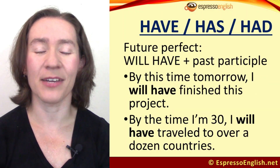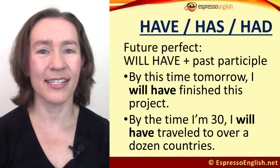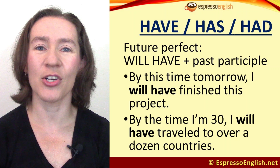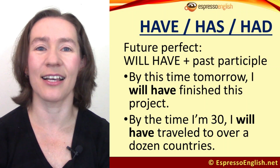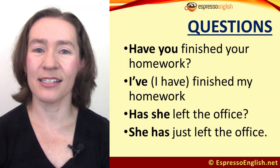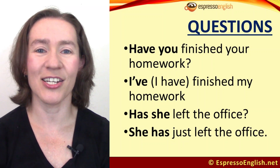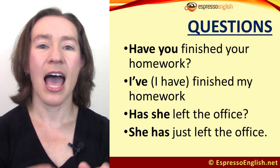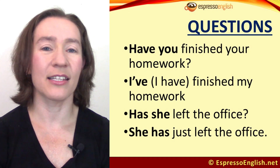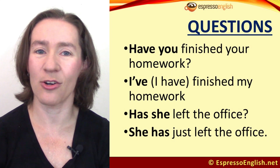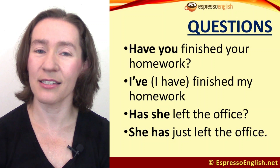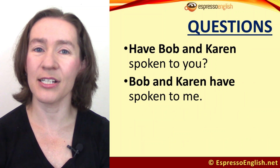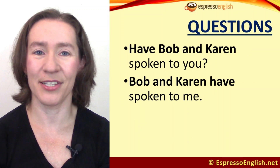For the future perfect we use will have. For example: by this time tomorrow I will have finished this project; by the time I'm 30 I will have traveled to over a dozen countries. When you ask a question with have, the word order changes and the helping verb comes before the subject: 'Have you finished your homework?' — 'I have finished my homework.' 'Has she left the office?' — 'She has just left the office.' 'Have Bob and Karen spoken to you?' — 'Bob and Karen have spoken to me.'